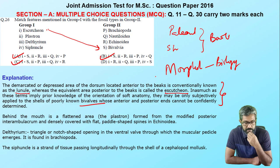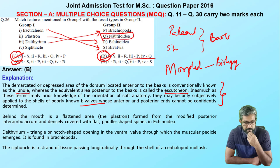Plastron is formed from the modified posterior interambulacrum and is densely covered with flat petal-shaped structures — found in Echinoidea, so that is R. Deltidium is a triangular-shaped opening in the ventral wall through which the muscular pedicle emerges — it belongs to Brachiopoda, so III = P, giving option B. Siphuncle is a strand of tissue passing longitudinally through the shell of cephalopod Mollusca, belonging to Nautiloidea.